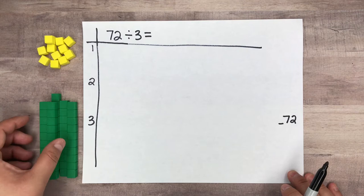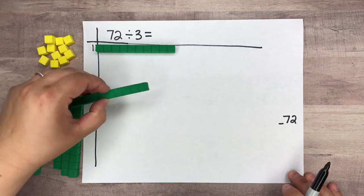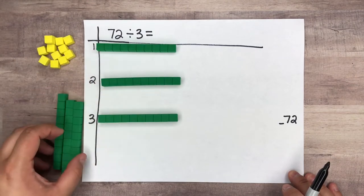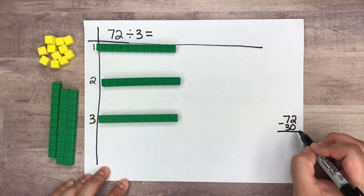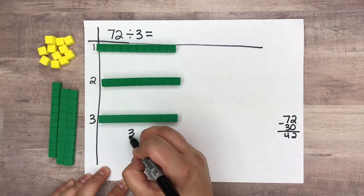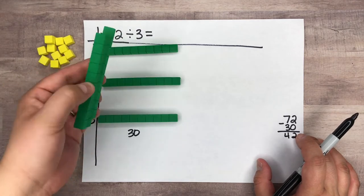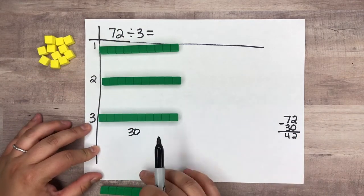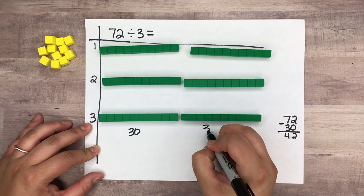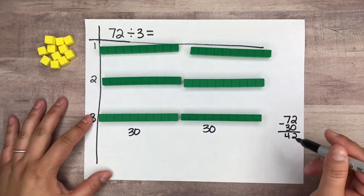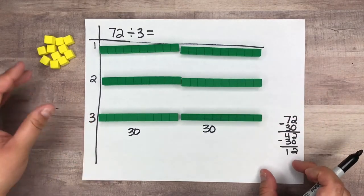Let me take my tens and divide those out. I have 72 in my pile. Here's 10, 20, 30. I've divided out 30, so 72 minus 30 is 42. Can I divide out another 30? Yes I can — 10, 20, 30. I no longer have 42 because I took out 30. 42 minus 30 is 12, and I have 12 left over.